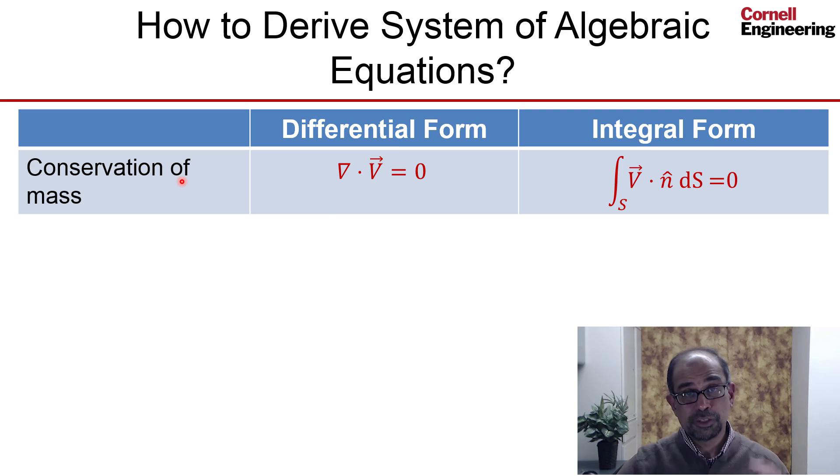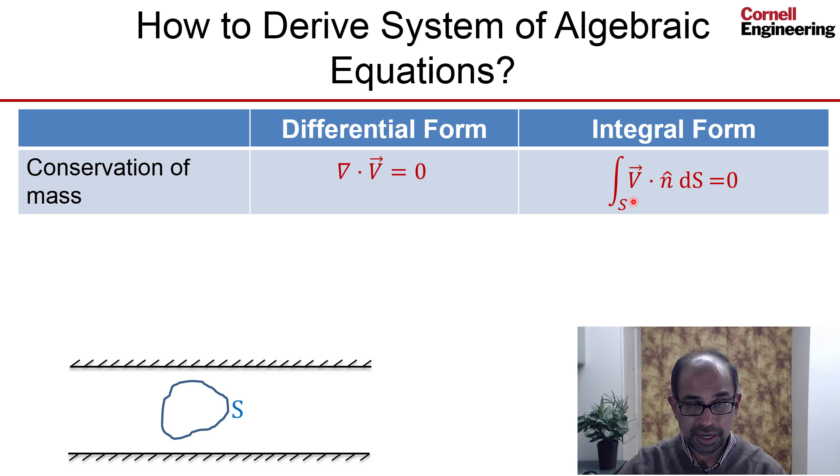So if we looked at conservation of mass, that's a differential form, and the equivalent integral form is shown over here, and that integral applies to any arbitrary control volume within the flow domain. And this just states that the net volume flow out of any arbitrary control volume has to be zero.